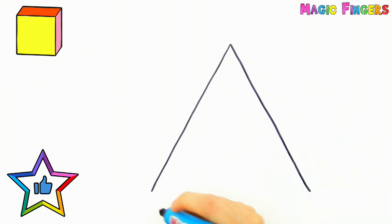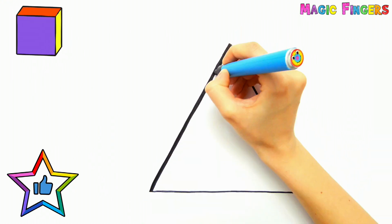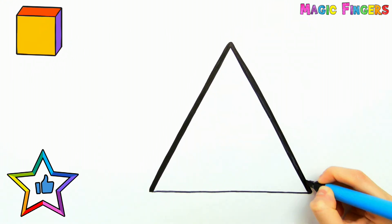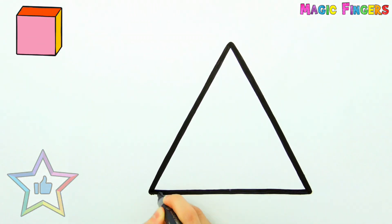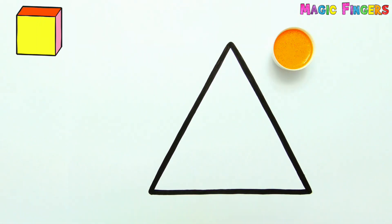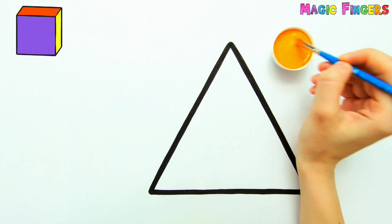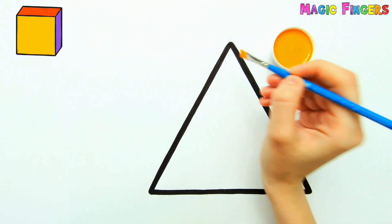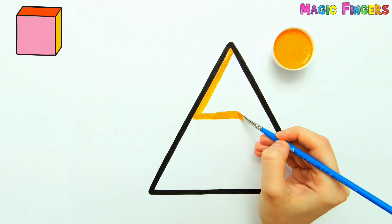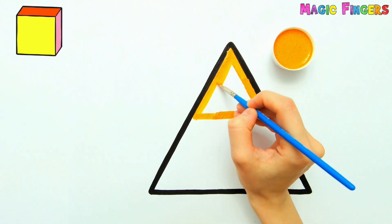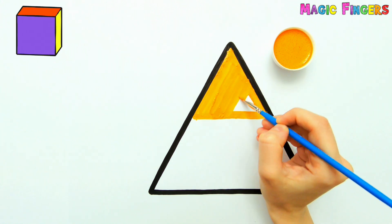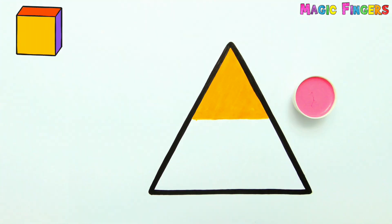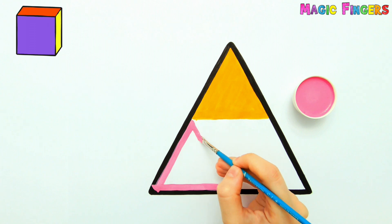Now I'm drawing a triangle. I'm going to paint this triangle with four different colors too. There will be four small triangles inside the big triangle. The triangle will turn into a pyramid after the painting.